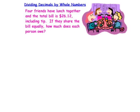Dividing decimals by whole numbers is one of your most useful skills. Four friends have lunch together and the total bill is $26.12 including tip. That means it's already in there. If they share the bill equally, how much does each person owe?